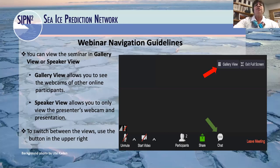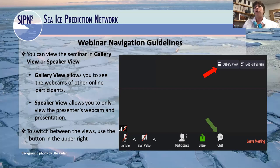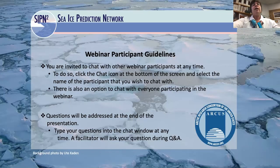There are two viewing options available today: gallery view and speaker view. You can switch between those views by clicking the icon in the upper right-hand corner of your screen, which is indicated by the red arrow. At the bottom of your screen is the chat button, shown with the green arrow. You are invited to chat with other webinar participants at any time. Click the chat icon and select the name of the participant you wish to chat with. There is also an option to chat with everyone. The chat panel is also where you can enter questions for the speaker.